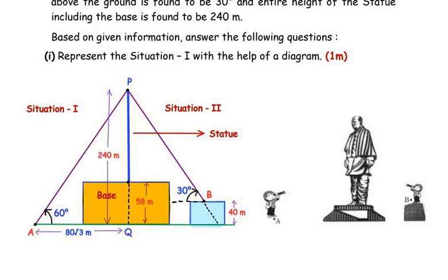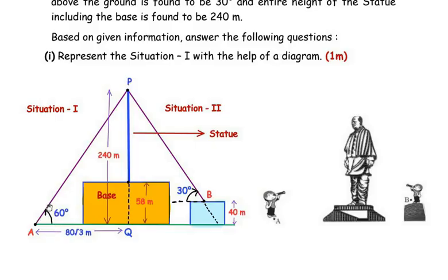The statue stands on a base which is 58 meters high, shown here in blue. In situation 1, the student is standing at point A on the ground at a distance of 80√3 meters from the base. AQ represents this distance. From point A, he looks at the top of the statue at point P, and his eyes make an angle of elevation of 60 degrees. This represents situation 1.